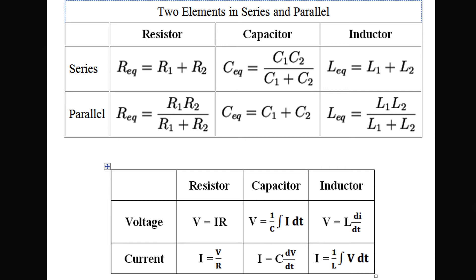Now look at the second table. The voltage across a resistor is V equals I times R, derived from Ohm's law, and the current through the resistor is V divided by R. For a capacitor, the voltage is 1 over C times the integral of I dt, and the current is C times the rate of change of voltage with respect to time, that is C times dV by dt.